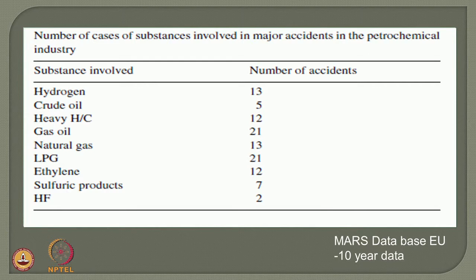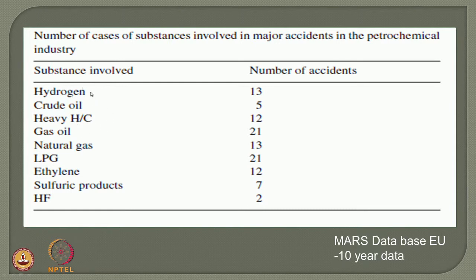Looking at the number of cases of substances involved in major accidents in the petrochemical industry in the recent past, as taken from the MARS database of the European Union for the past 10 years: the majority come from hydrogen, crude oil, heavy hydrocarbons about 12, whereas gas oil is about 21, and the majority essentially comes from gas oil and LPG. Sulphuric products, ethylene, and crude oil have very marginal and insignificant accident numbers. So process industry where gas oil, LPG etc. are being processed must be very careful, as heavy hydrocarbons and hydrogen can cause serious consequences and have high potential for major accidents.